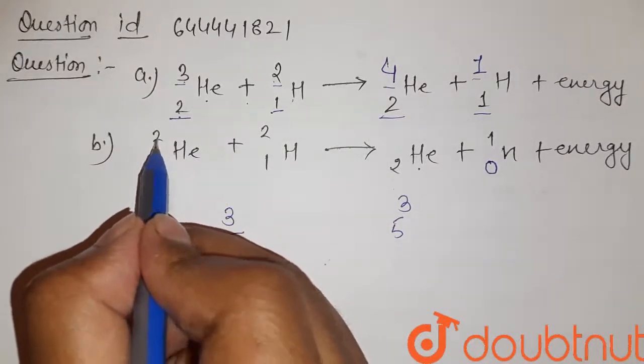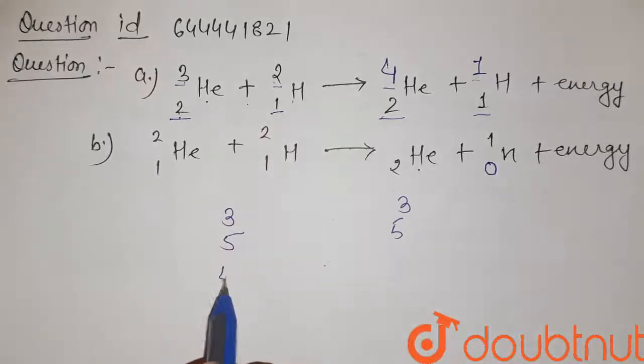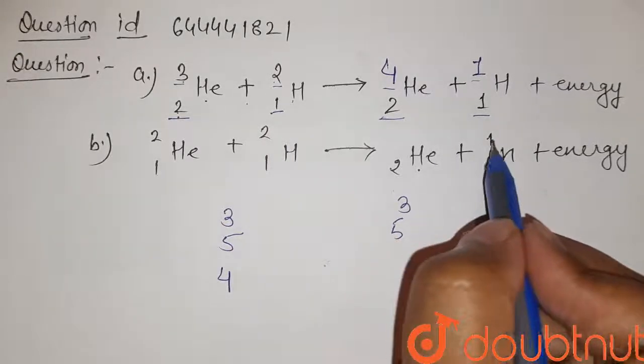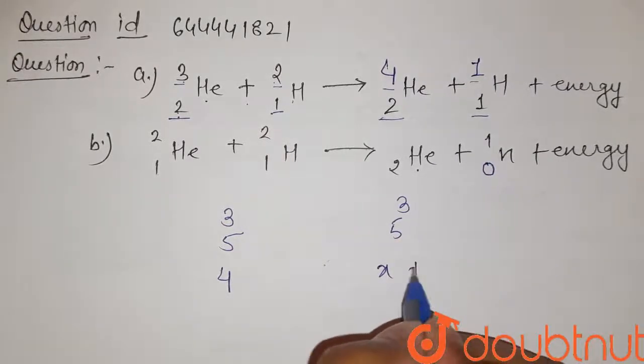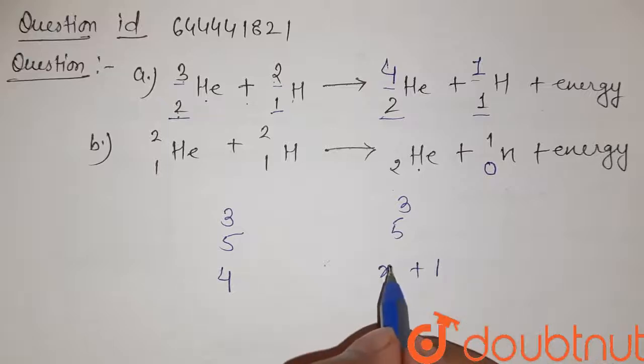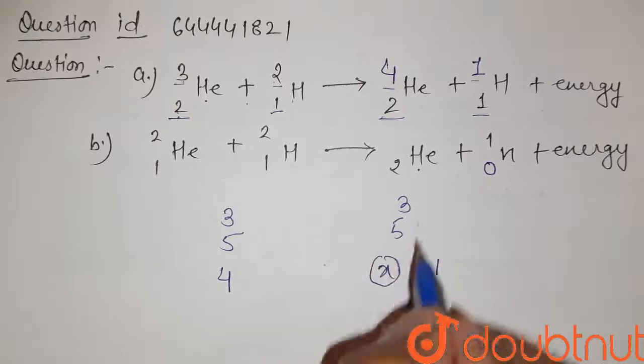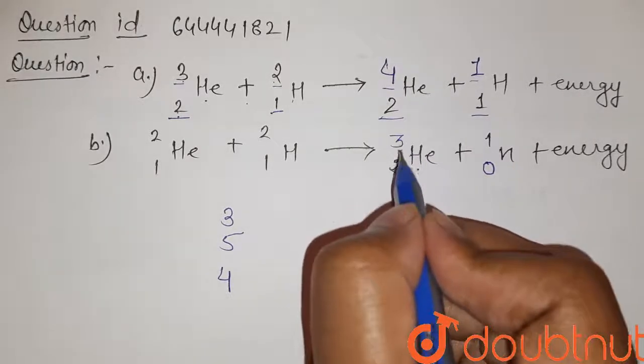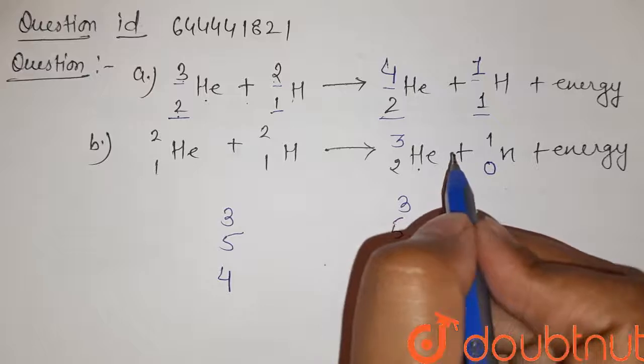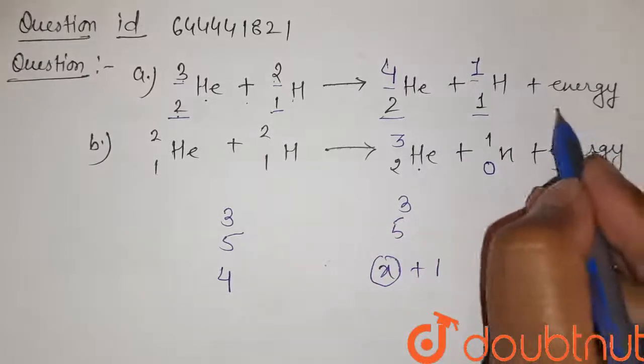So here the mass number is 2 plus 2 that is 4 but here is x plus 1. So here we get the value of x as 3. So it is 3 2 Helium and the energy is released in both the process.